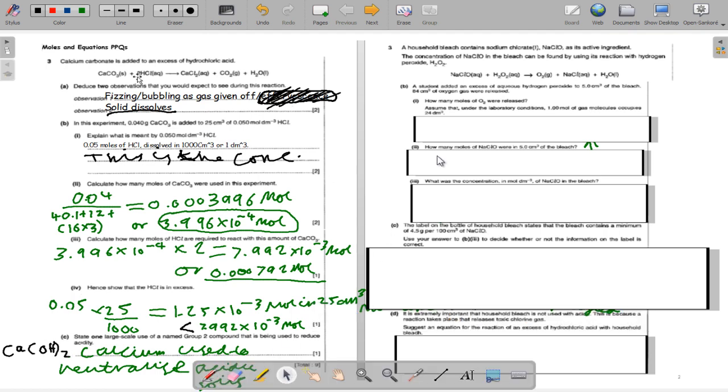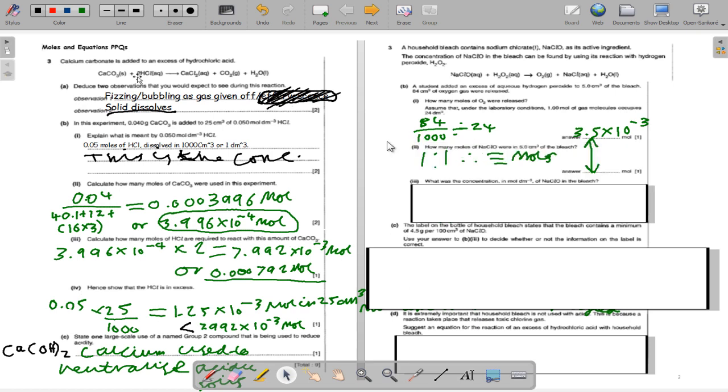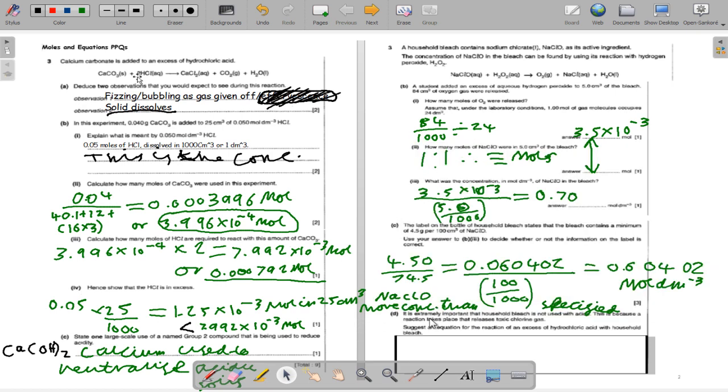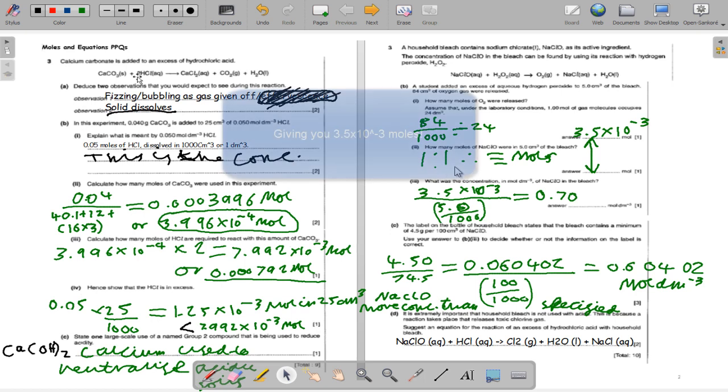For this question, moles of O2 released, we use the gas equation now to rearrange to have volume of gas over 24, which is our constant, to get the moles back. If you do it the other way round, 3.5 times 10 to the minus 3 times by 24, you get 0.084 decimeters cubed. So that way we know we've done it right. Another way to check it is to just do 84 over 1000 to get 0.084 and put 0.084 over 24.